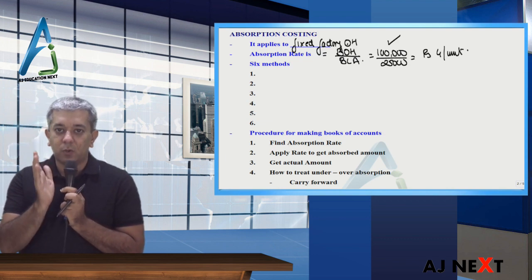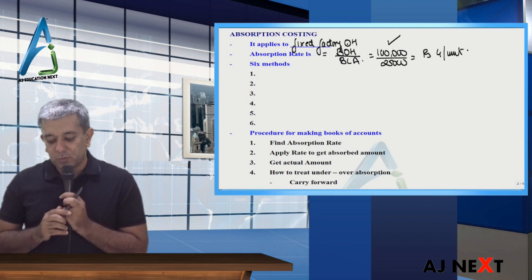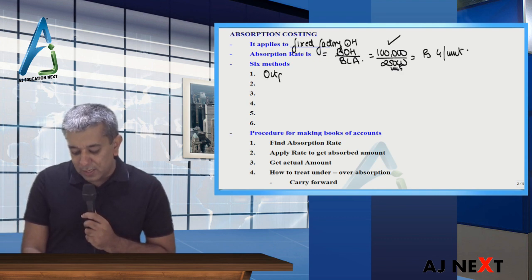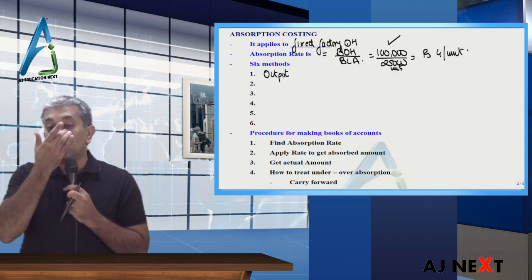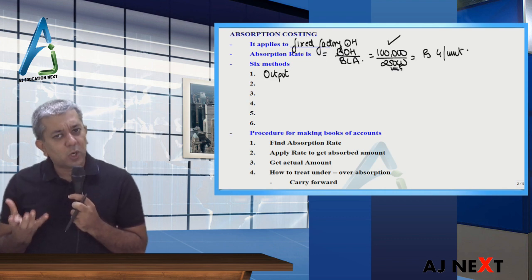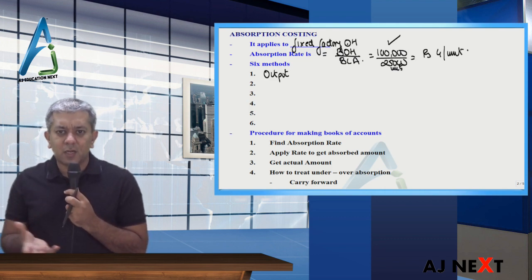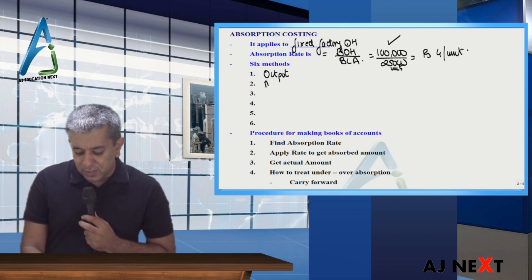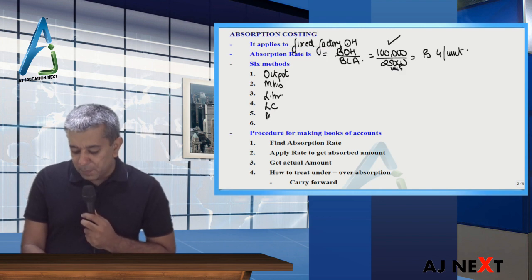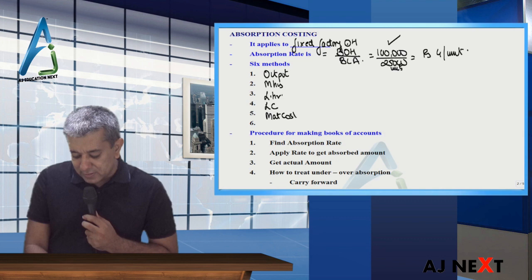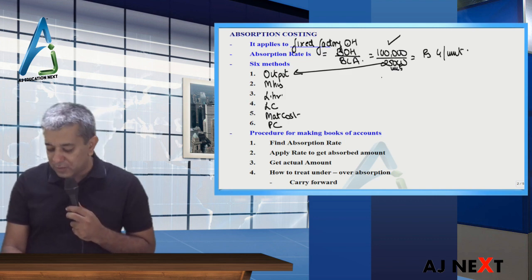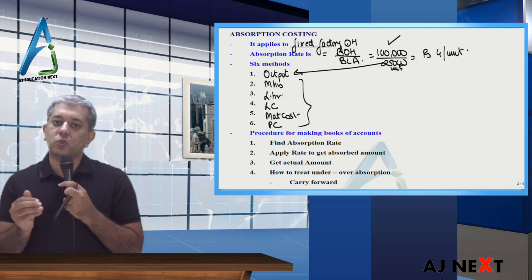Absorption rate is also called as accounting rate. It is also called as application rate, absorption rate, recovery rate, charging rate. Whatever you want to call it. This 4 per unit only means one small thing. That is, whenever you make one unit, charge 4 rupees in your books of accounts. This, if you put in the denominator in units, it will be called as output method. Output method should only be followed by those companies which manufacture only one single product. Nowadays, many companies don't make one product, they make multiple products. So for them we have other methods ahead: machine hour method, labor hour method, labor cost method, material cost method and lastly, prime cost method.